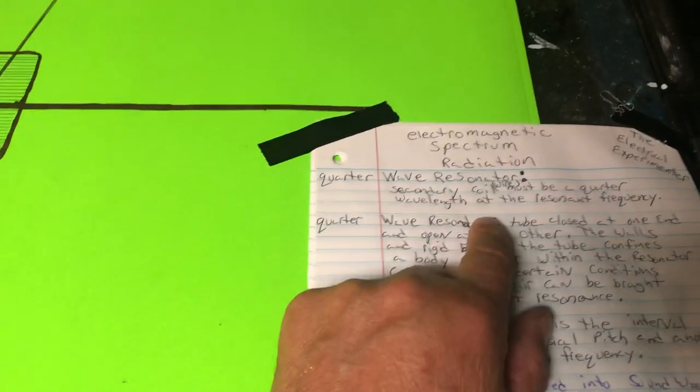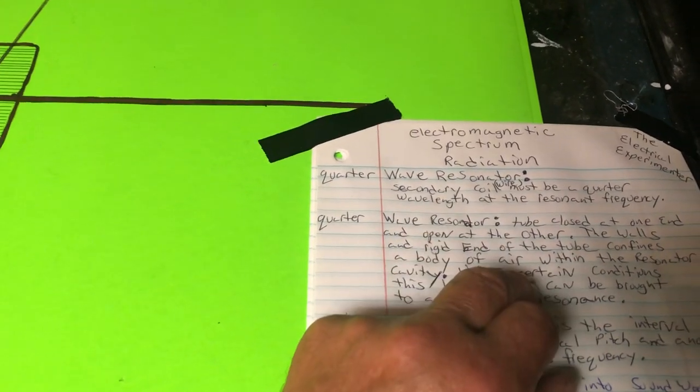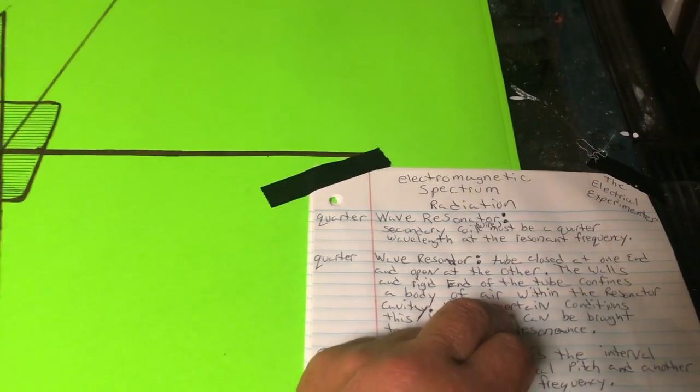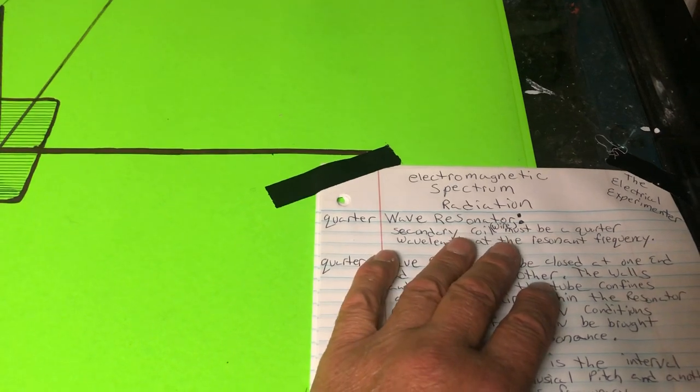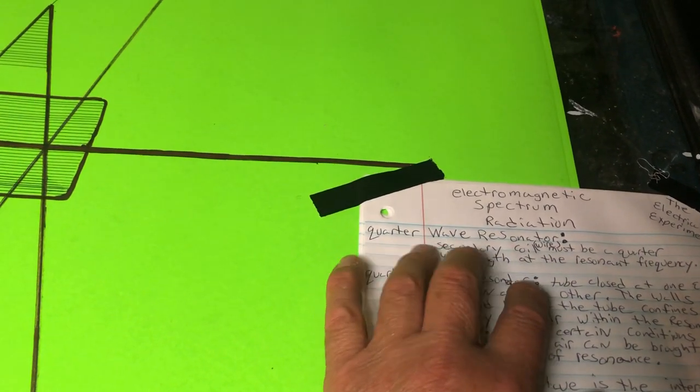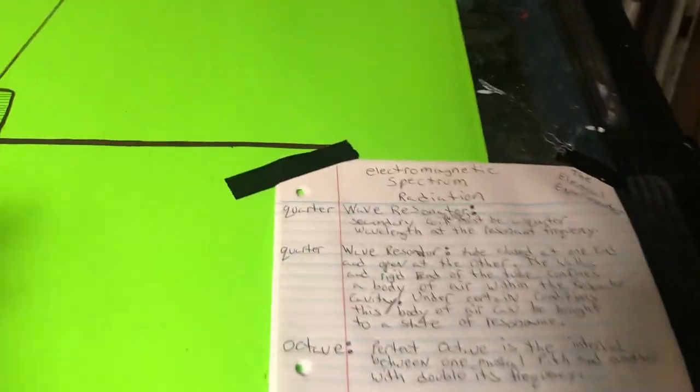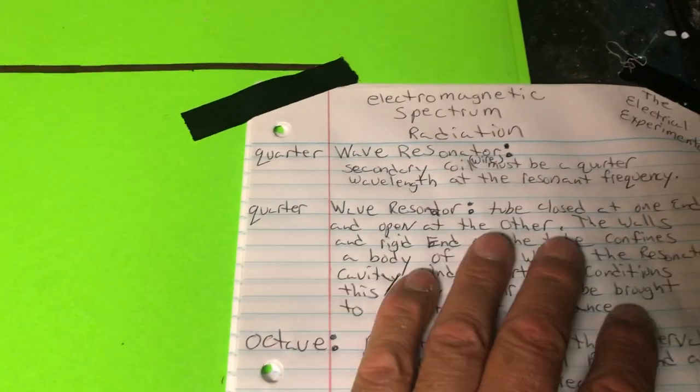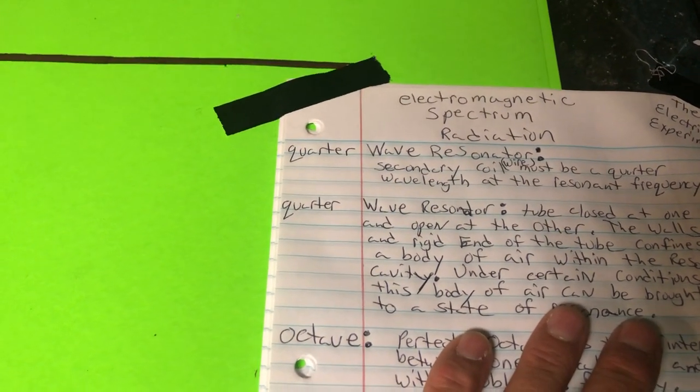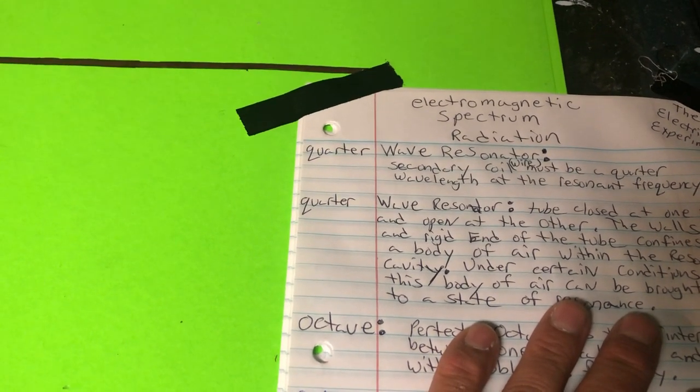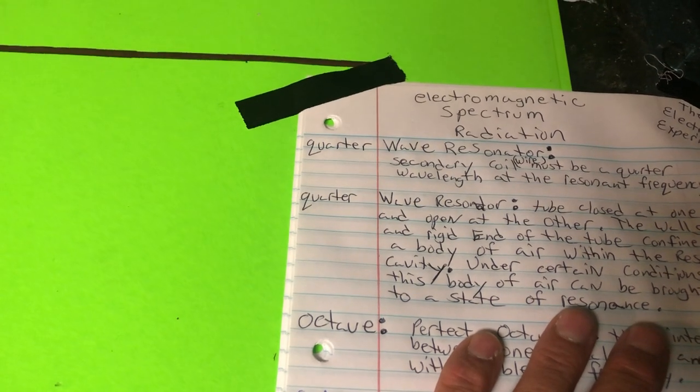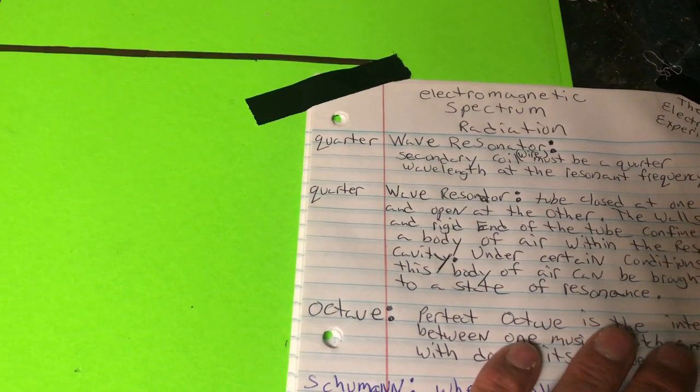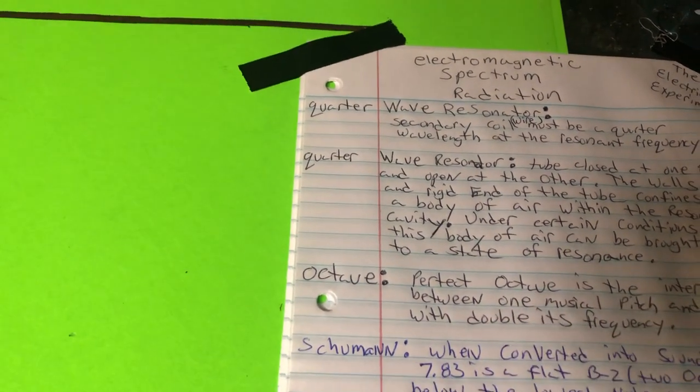We're calling this project here a quarter-wave resonator. A quarter-wave resonator is a secondary coil. Wire must be a quarter-wavelength of the resonant frequency. So whatever frequency you're running there, a quarter-wave resonator. What does a quarter-wave mean? Let's just go a little deeper. Quarter-wave resonator is a tube closed at one end and open at the other. The walls and rigid ends of the tube confines the body of air within the resonator cavity. Under certain conditions, this body of air can be brought to a state of resonance.